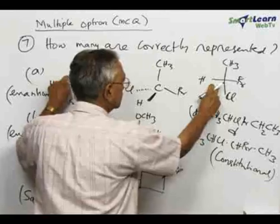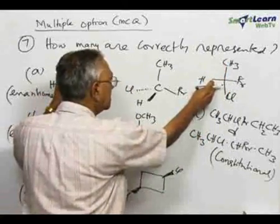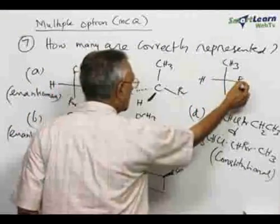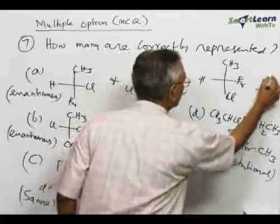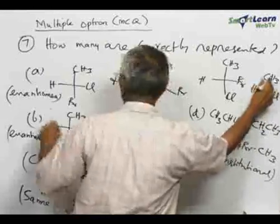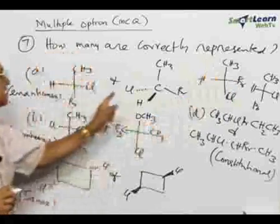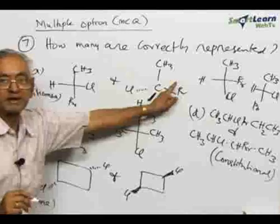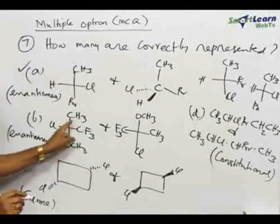So what is the relationship between the two? At first look they do not appear to be enantiomers. But if we make one exchange — bring the bromine here and bring the chlorine here — writing another structure wherein bromine and chlorine are swapped, the two become exactly identical. By making one interchange they become identical, which means they are enantiomers. So pair A is correctly represented.